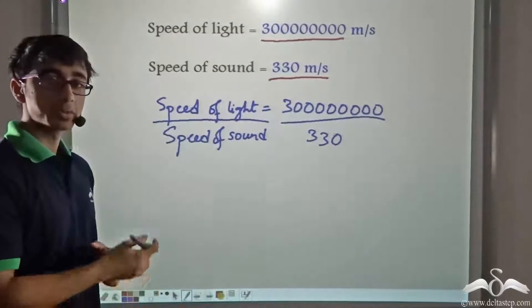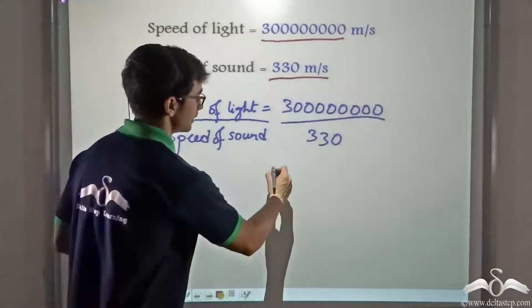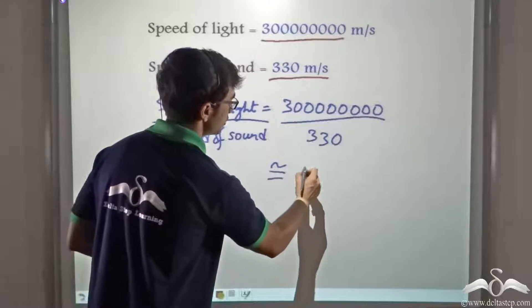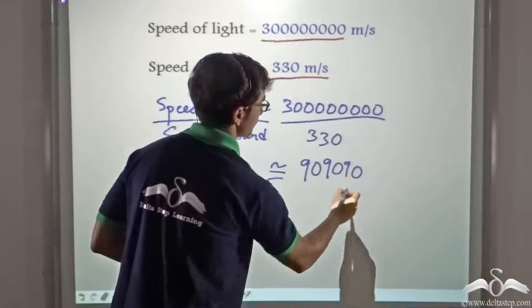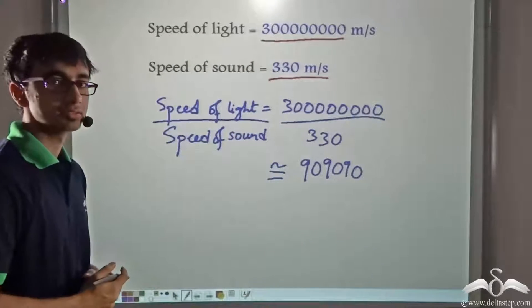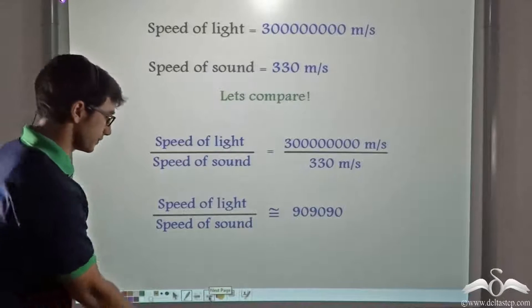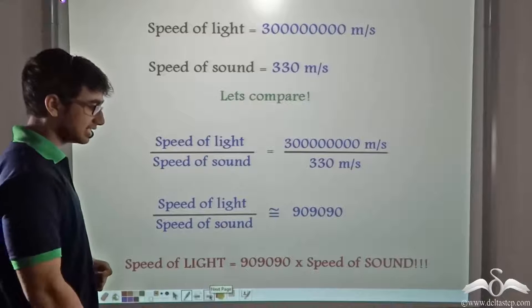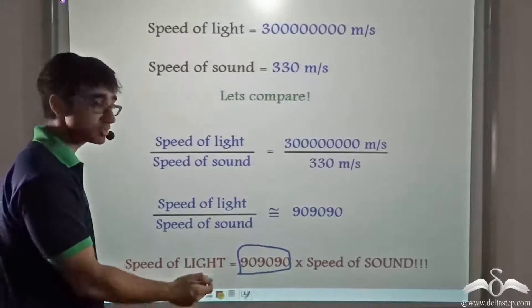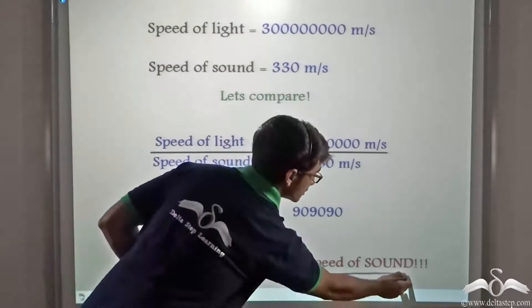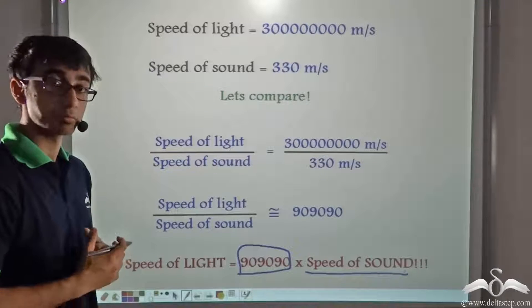So this is the ratio between the two speeds. Now if we simplify this ratio, we will find that the value comes to around 9 lakh 9090. So what can we say? We can say that the speed of light is this many times, that is 9 lakh 9090 times the speed of sound. So you can well imagine how much fast light is as compared to sound.